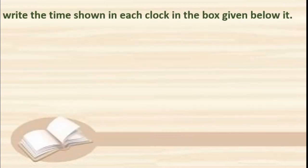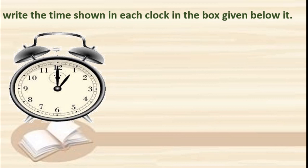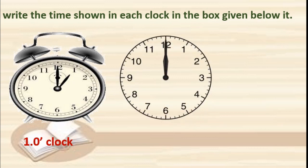Write the time shown in each clock in the box given below it. Here the hour hand is on 1 and the minute hand is on 12, so it is 1 o'clock. Next: both hands are overlapped — both are on 12 — means exactly it is 12 noon. We say 12 noon, not 12 o'clock.